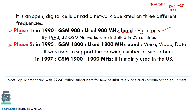Phase two was introduced in 1995, named GSM 1800, using the 1800 MHz band for both uplink and downlink. GSM 1800 supports voice, video, and data, which increased the number of subscribers worldwide. In 1997, GSM 1900 was introduced using the 1900 MHz frequency, commonly used in the US. GSM is a most popular standard with 22 to 50 million subscribers for cellular telephone and communication equipment.